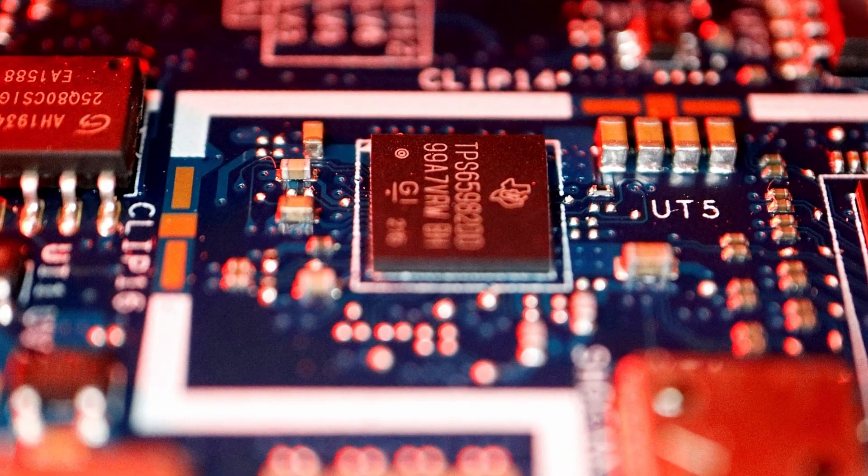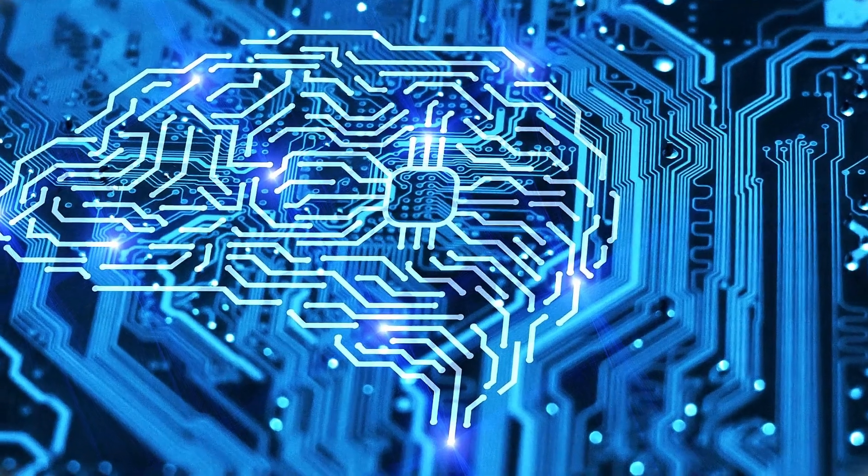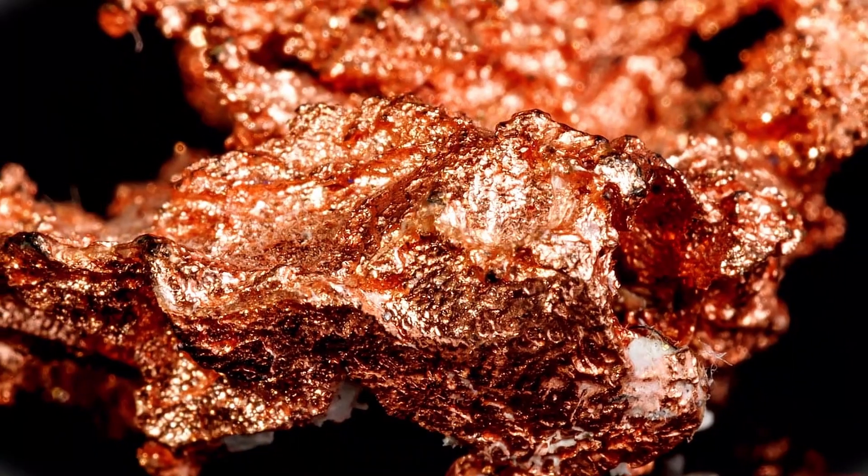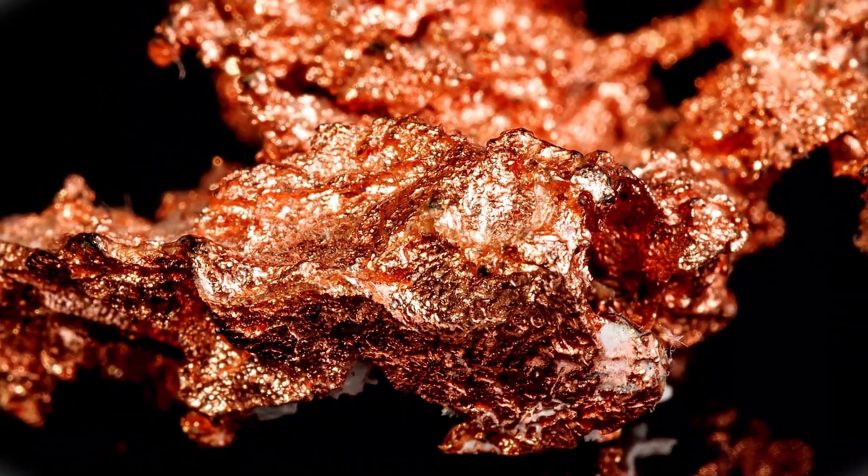But what about the usual electronic chips? The key raw materials are silicon, copper, gold, aluminum, and tungsten. With silicon already being addressed, let's talk about copper.